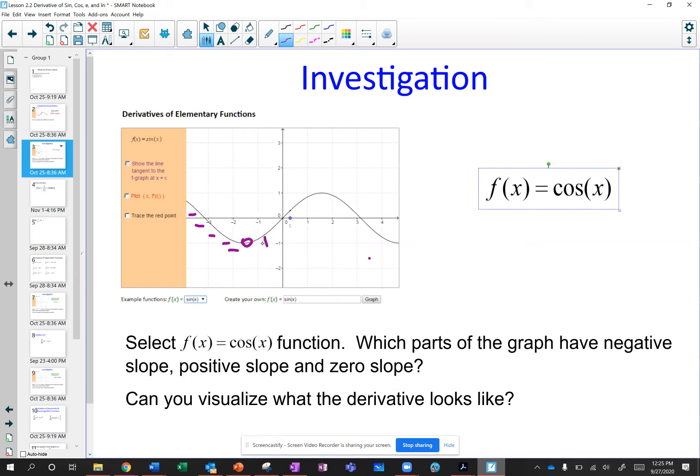And then we have slope is positive, positive, positive, positive. And then again, we have a 0, and then negative, negative, negative. So again, it has this oscillating behavior.